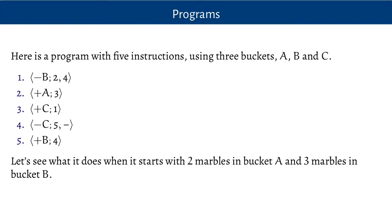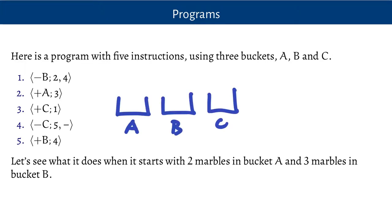Let's have a look at what this program does when we start with two marbles in bucket A and three marbles in bucket B and nothing in C. Starting at instruction one, we take a marble out of bucket B, go to instruction two where we put a marble in bucket A, and go to instruction three where we put a marble in bucket C. Then we go back to the beginning and do the same thing: marble out of bucket B, in bucket A, and in bucket C. We repeat this loop, and we go back to instruction one again, but now there's nothing in bucket B to take out, so we go to instruction four.